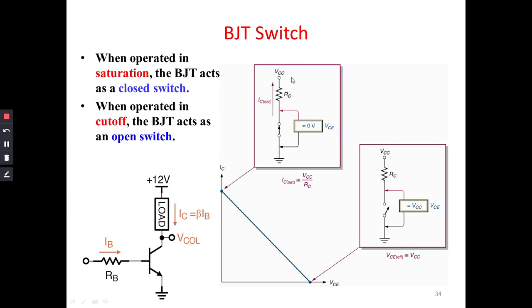When the transistor is on, the output voltage will be 0. This is because all the current will bypass through the switch towards the ground, and at the output we do not get any voltage across it.